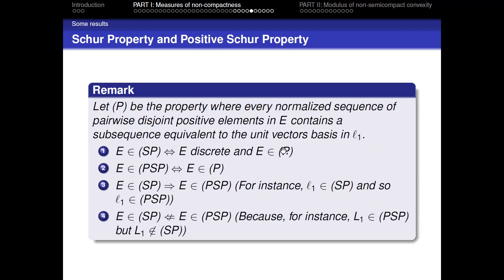There is a remark. If E has the Schur property, then it has the positive Schur property. For instance, ℓ¹ has the Schur property, and so ℓ¹ has the positive Schur property. But the converse is not always true: L¹ has the positive Schur property but does not have the Schur property.